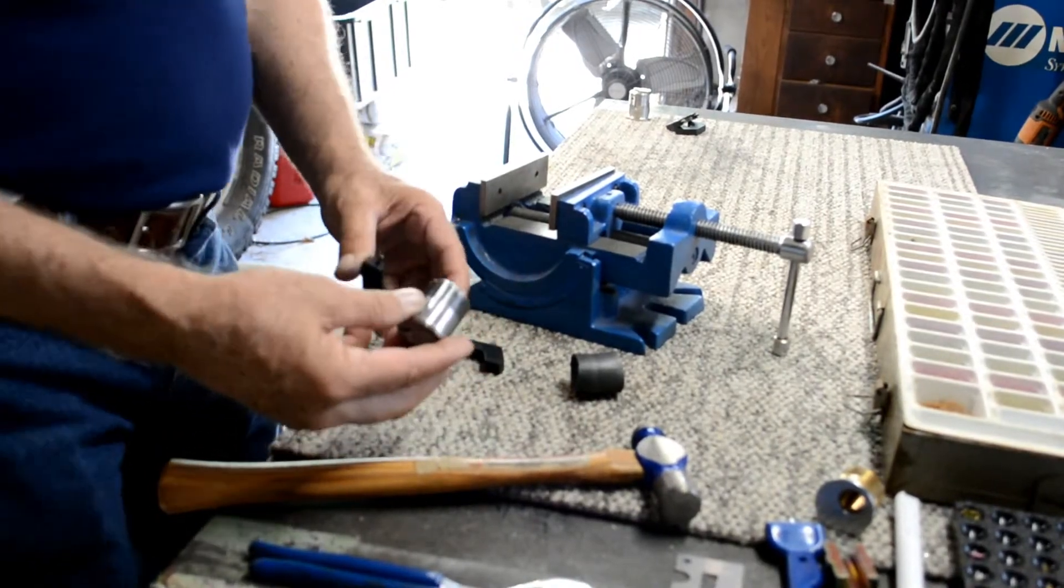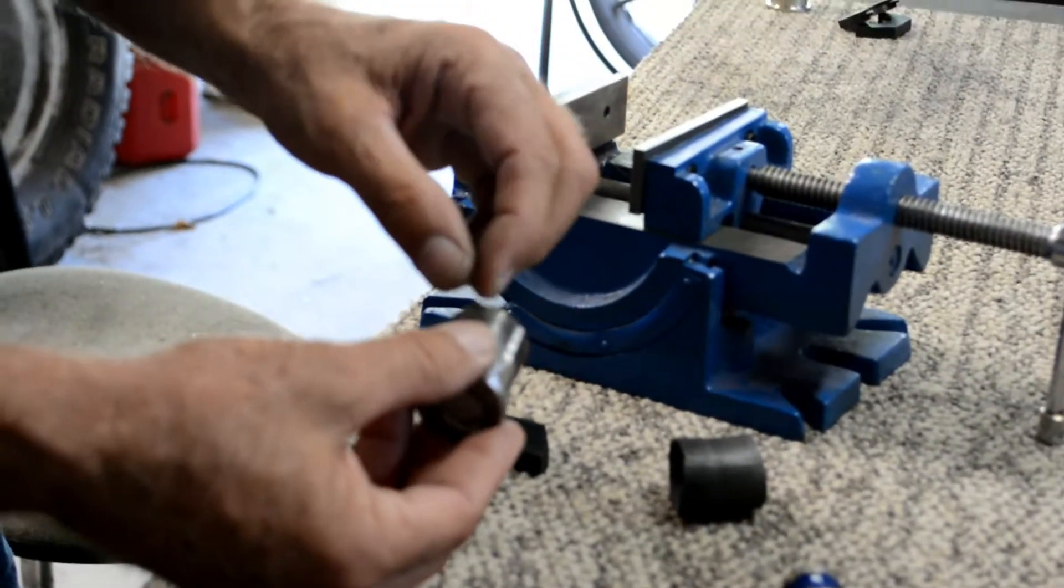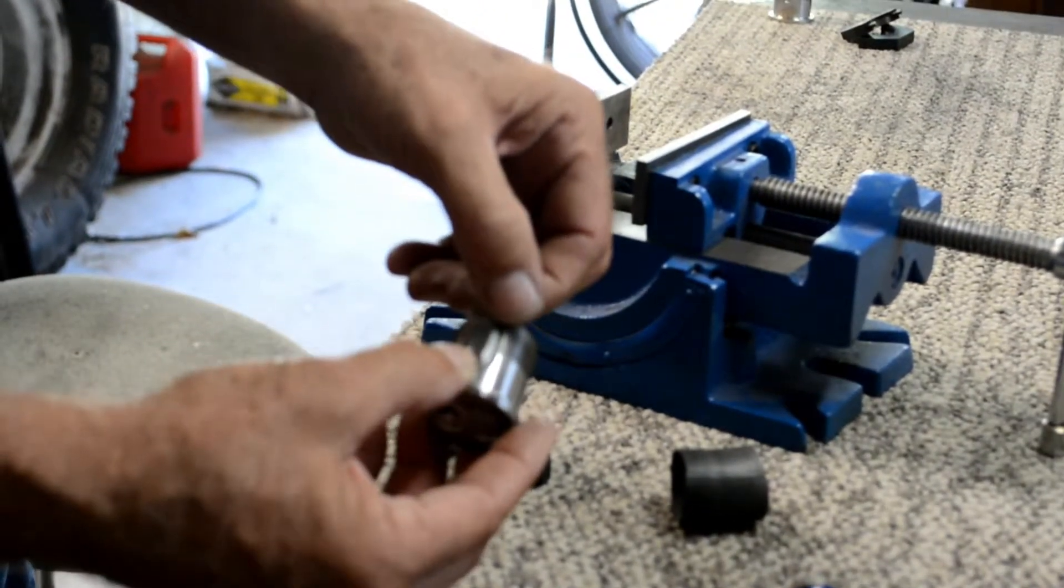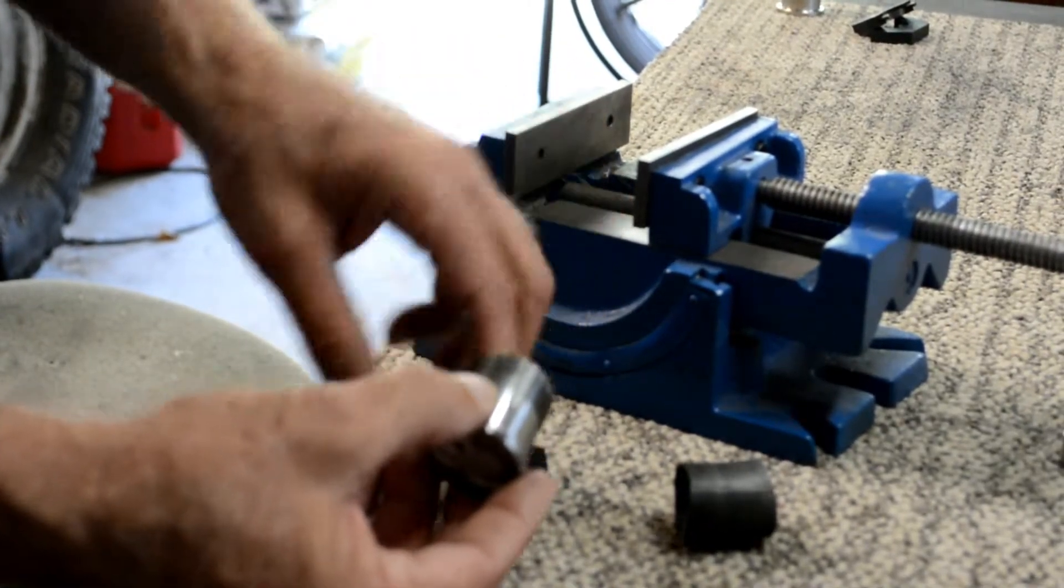So how ours works is instead of starting at the end and trying to work our way back through the damaged parts of the thread, we're going to start in the back where the threads are good and work back out towards the portions that are damaged.